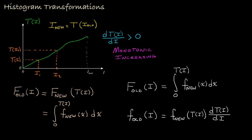That result is then multiplied by the derivative of the transformation with respect to i. So these two relationships help us understand how the histogram is transformed when we transform the intensities through a particular transform denoted by T sub i. Let's look at a few examples that show how we can pick this transformation to get a desired histogram for our transformed image.